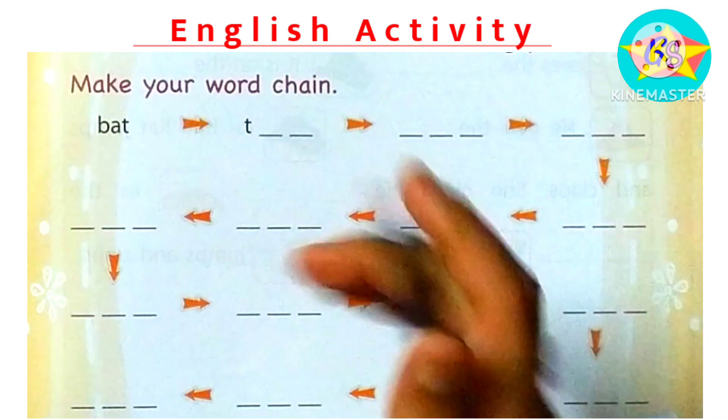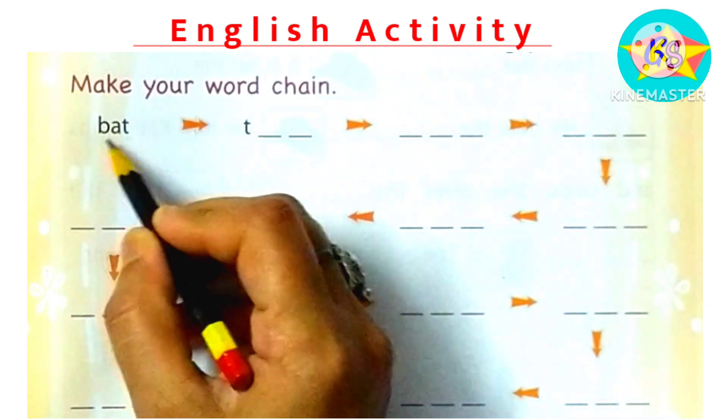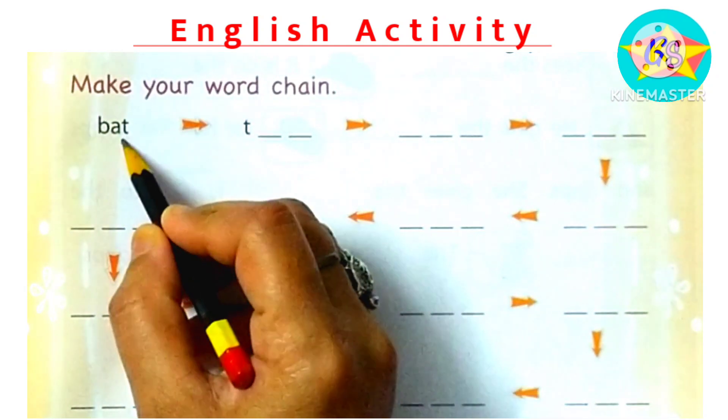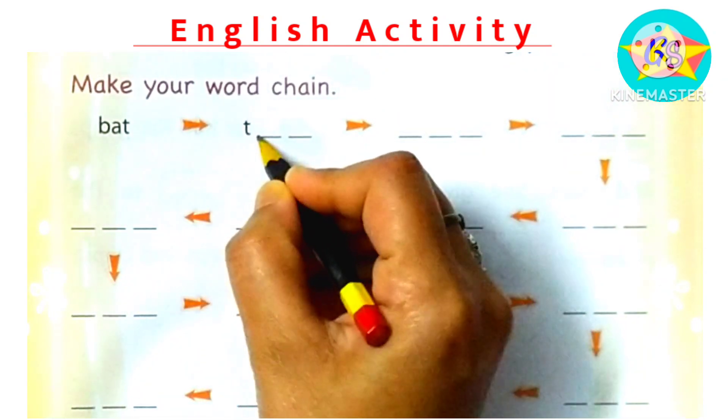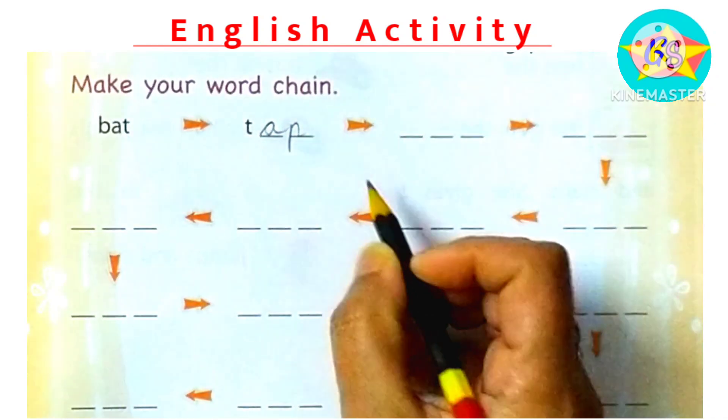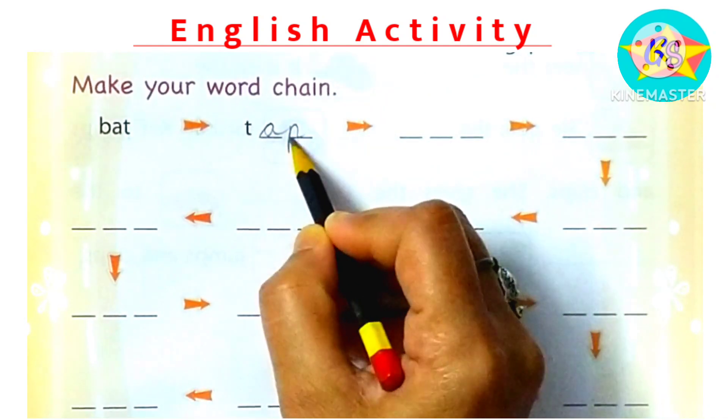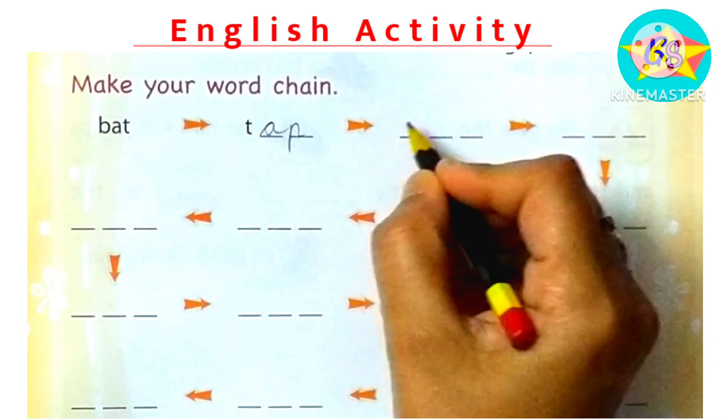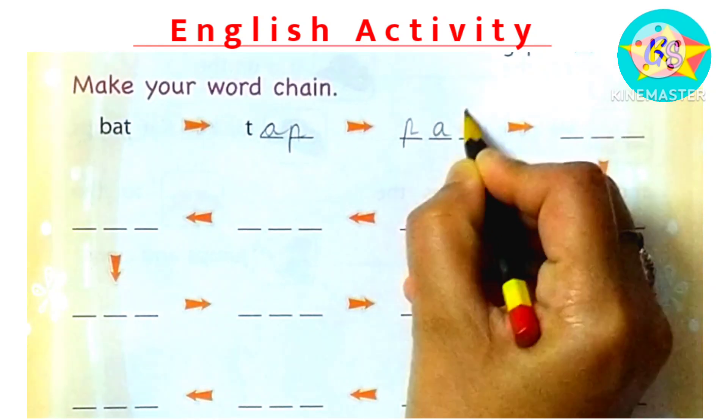So we can write BAT. Next, we can start from T. Next, we can write TAP. Now P came. Then we can start from P. We can write PAT.